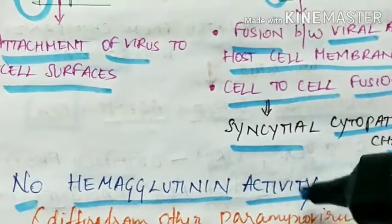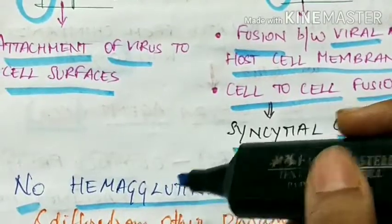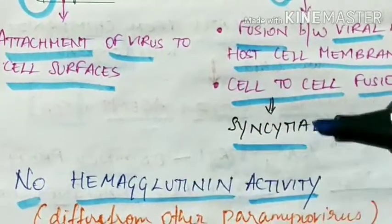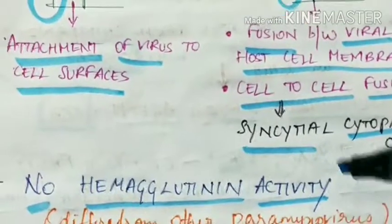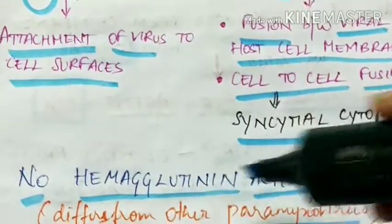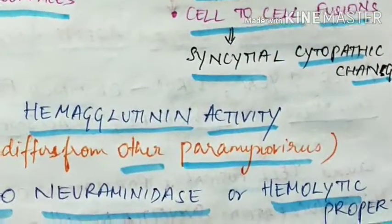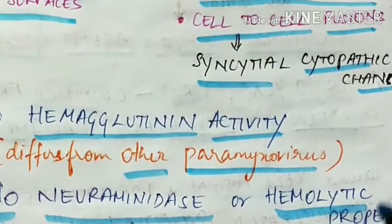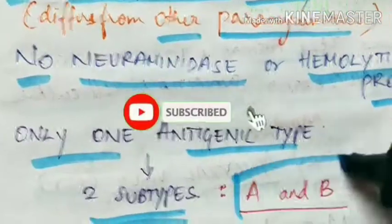There is no hemagglutinin activity in respiratory syncytial virus, and this property differentiates it from other paramyxoviruses — it is the only paramyxovirus which does not have hemagglutinin activity. Also, there is no neuraminidase or hemolytic properties in RSV. There is only one antigenic type and two subtypes, A and B.